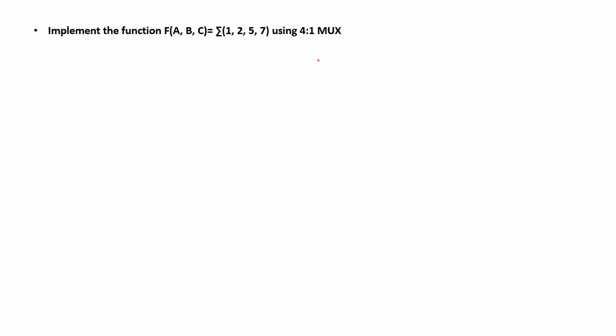Hi, in this video we will look at the case when the number of select lines of the multiplexer is not equal to the number of input variables in the given problem. Here we are given implement the function F = Σ(1, 2, 5, 7) using 4:1 MUX.